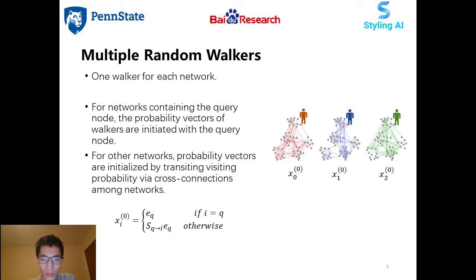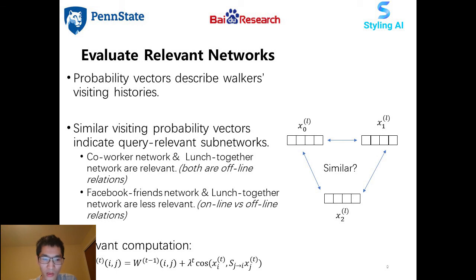Specifically, we send out a random walker in each network to explore the network topology based on corresponding transition probabilities. For networks containing the query node, the probability vectors of walkers are initiated with the query node. For other networks, probability vectors are initiated by transiting visiting probability via cross-connections among networks. Then probability vectors of walkers are updated step-by-step. Each walker is associated with a visiting probability vector which describes the walker's visiting history.